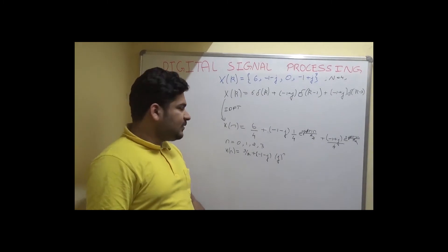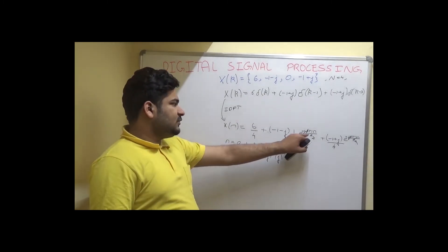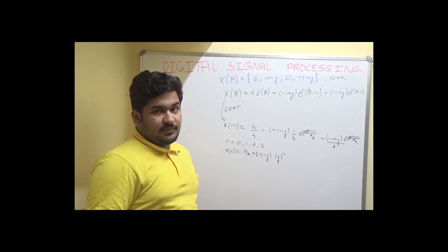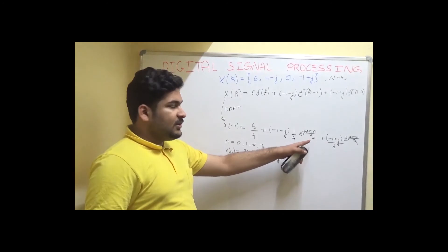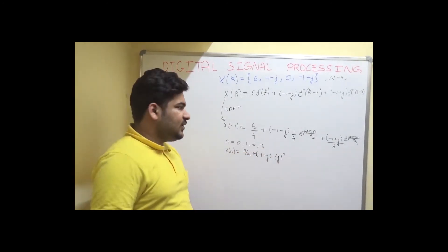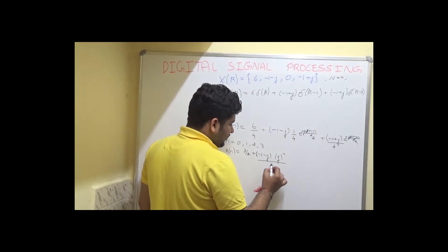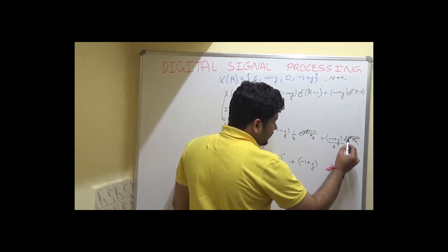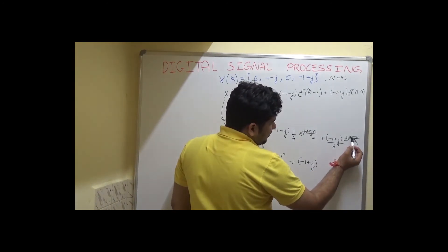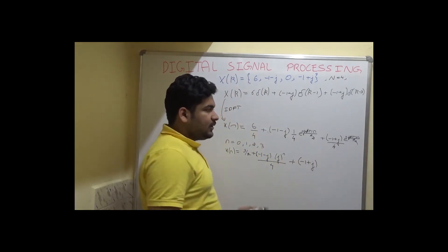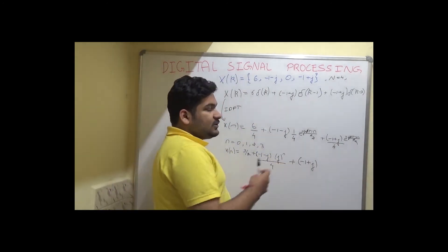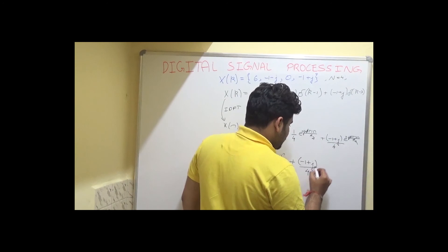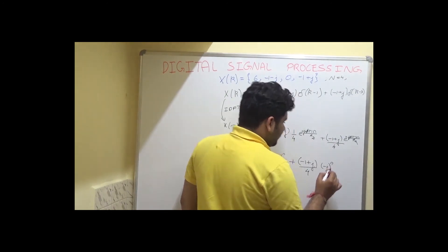Because e raised to the power j·pi/2 equals cos(pi/2) plus j·sin(pi/2). Cos(pi/2) is 0 and sin(pi/2) is 1, so we just get j raised to the power n. Similarly, e raised to the power j·3·pi/2·n — since sin(3·pi/2) is minus 1 — becomes minus j raised to the power n. So the full expression is x(n) = 1.5 + (minus 1 minus j)·j^n / 4 + (minus 1 plus j)·(minus j)^n / 4.